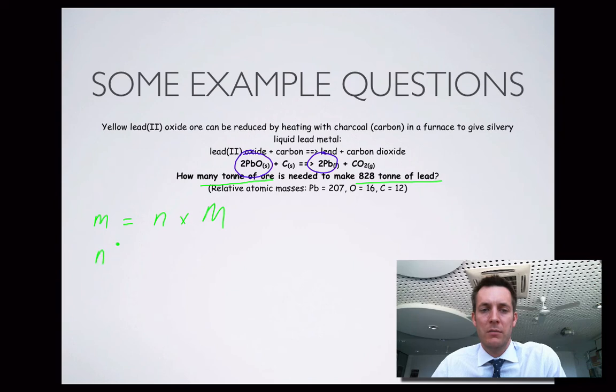Is it related to the number of moles of lead? Let's see. The number of moles of ore or the number of moles of PbO, which is 2, is the same as the number of moles of lead because that's 2 as well. So, number of moles of PbO equals number of moles of Pb. If I can find the number of moles of Pb, yes I do.